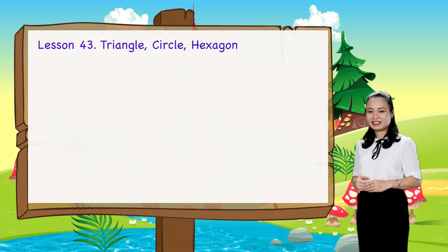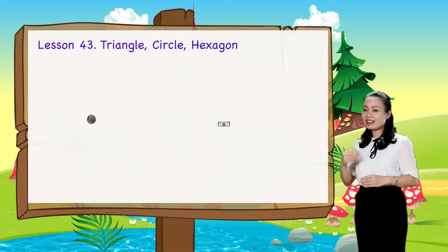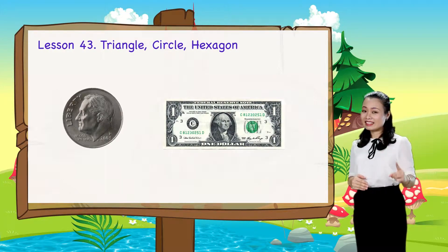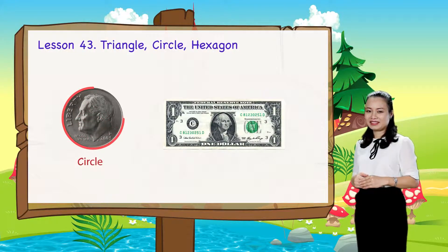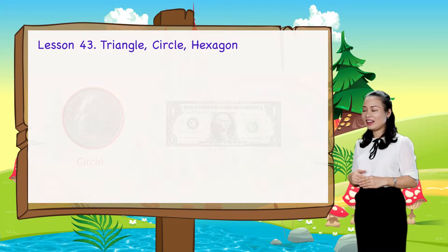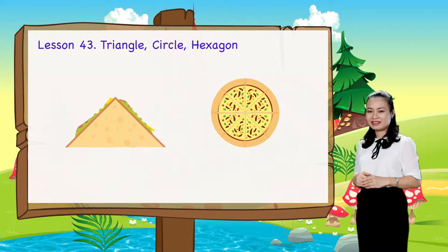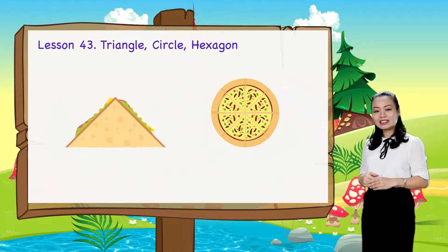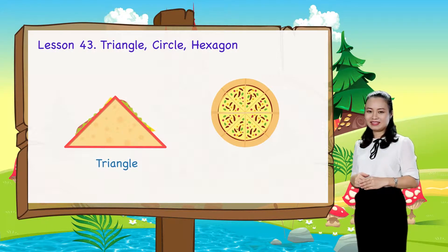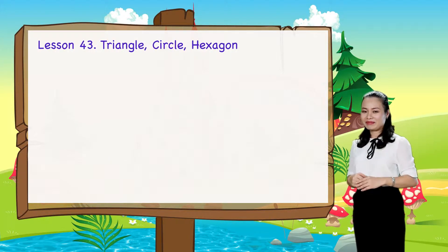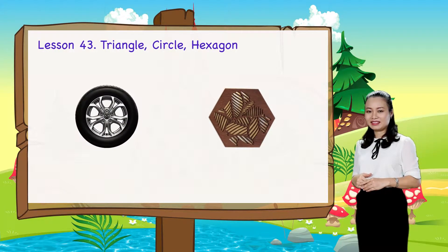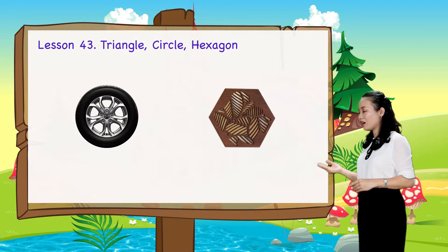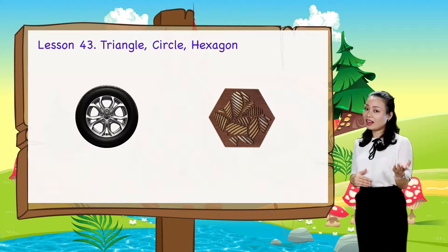What shape is a circle? The shape of the koi is a circle. What shape is a triangle? The shape of the sandwich is a triangle. The last one — which shape is a hexagon? The shape of the coaster is a hexagon.